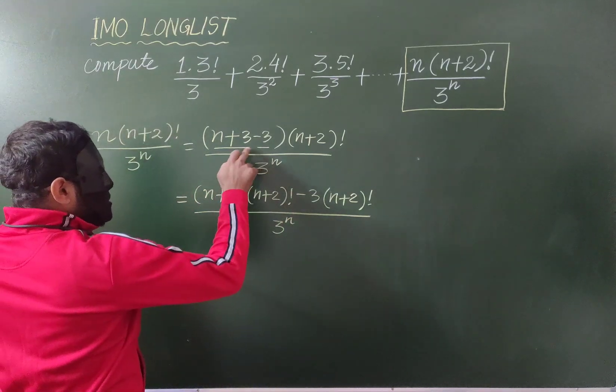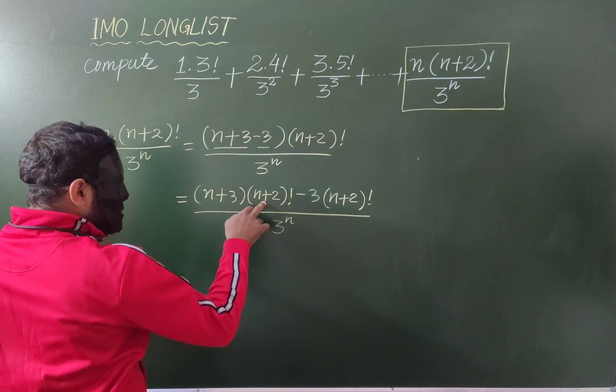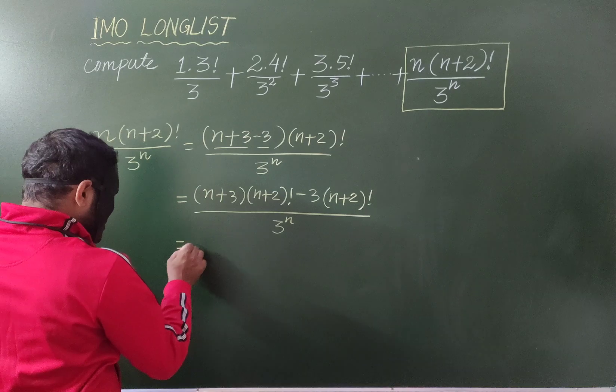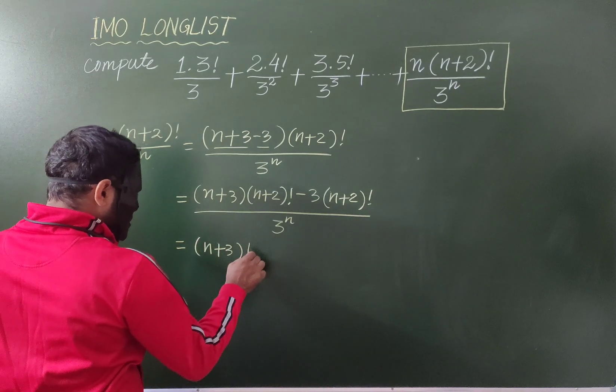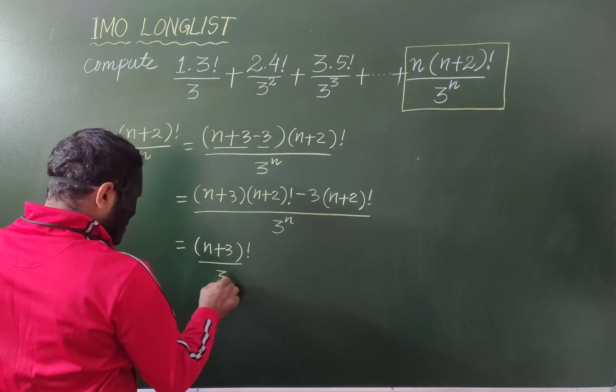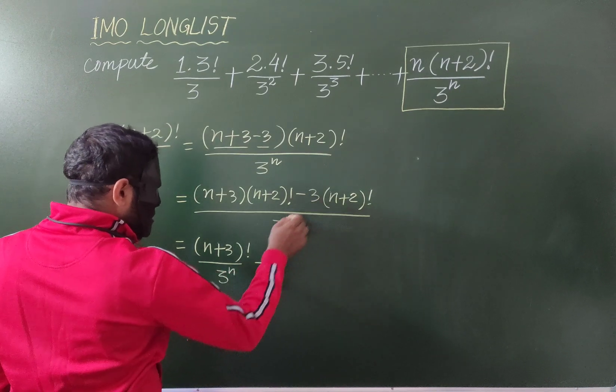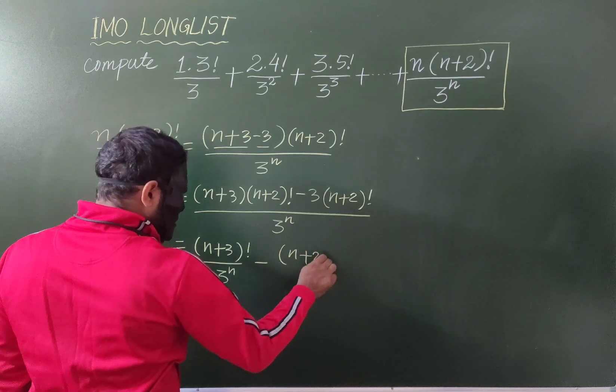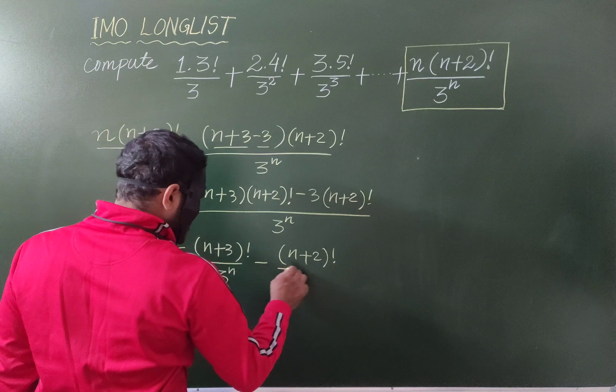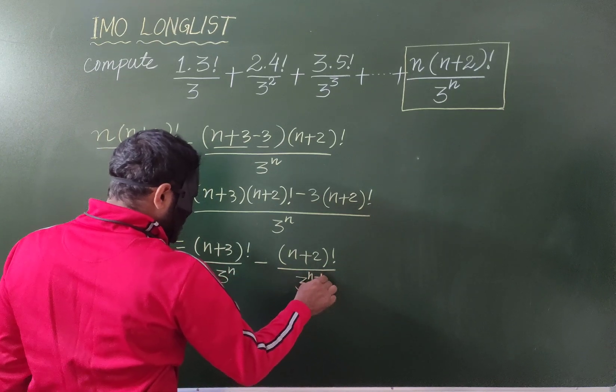Now, you can realize why I added 3 and subtracted 3 because so that now n plus 3 into n plus 2 factorial will become n plus 3 factorial by 3 to the power n minus 3. Again, this 3 and this 3 will cancel. So, n plus 2 factorial by 3 to the power n minus 1.